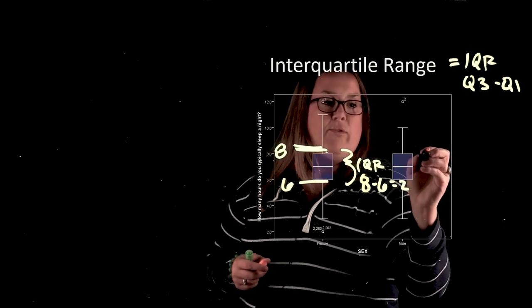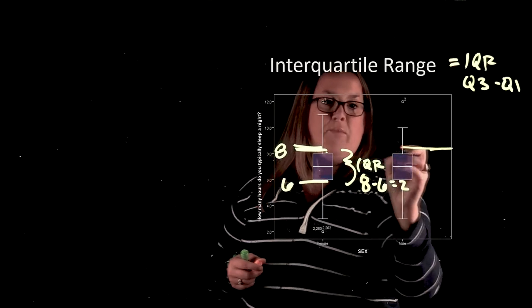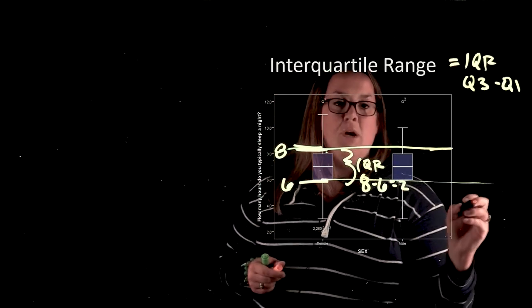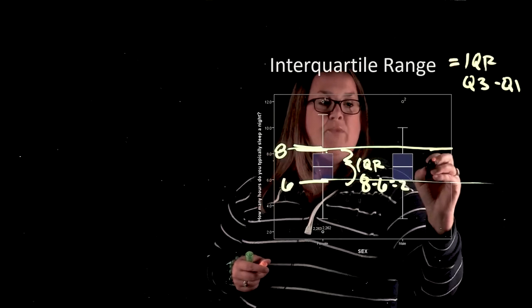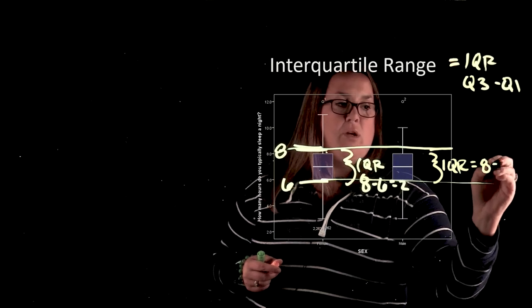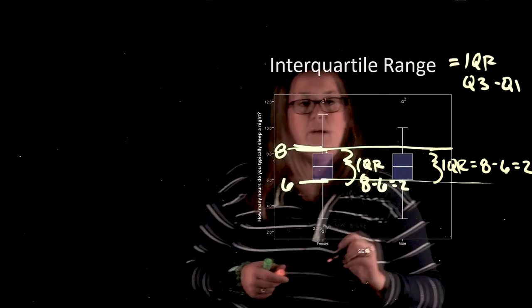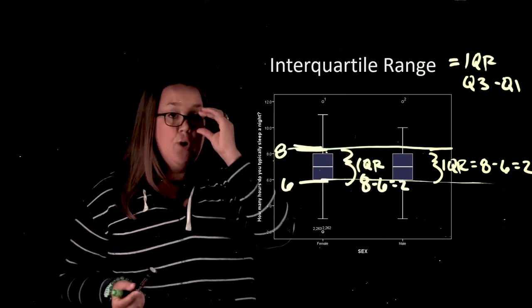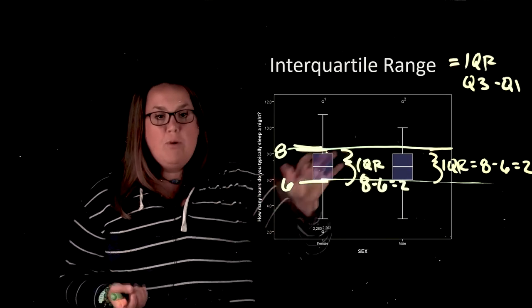Here, actually for males, it looks like it's the exact same thing. They have the same Q3, and they have the same Q1, so same thing here. Remember the box is that interquartile range. We have a Q3 of eight and a Q1 of six, so we have an interquartile range of two. So that's how you could calculate it with a box plot.